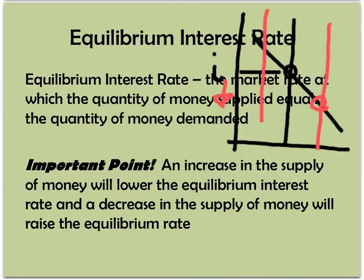If the Fed decreases the supply of money, our interest rate goes up. So that's the second thing to learn about interest rates: interest rates and the money supply have an inverse relationship. When the money supply goes up, interest rates go down, and vice versa.